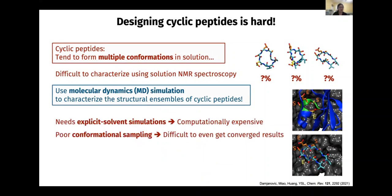So I have two problems: I need to use explicit solvent simulation, which is very expensive, and I also have poor conformational sampling, which means it's very difficult to get converged results. I'm going to share how we overcome this sampling problem and how we use molecular dynamics simulation efficiently by combining the results with a machine learning model.